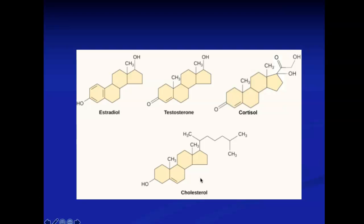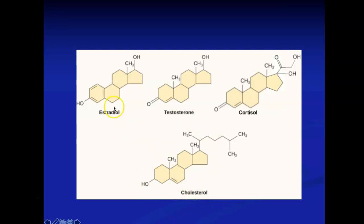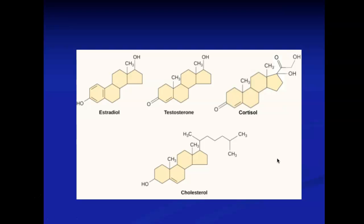Steroid is the umbrella term for cholesterol, estradiol (estrogen), testosterone, and cortisol — the hormone released when you're stressed. Cholesterol is the precursor to estrogen, testosterone, and cortisol, meaning eating cholesterol helps you make those three hormones. All steroids share four fused rings, are hydrocarbons, and are hydrophobic, though the side chain groups differ slightly.